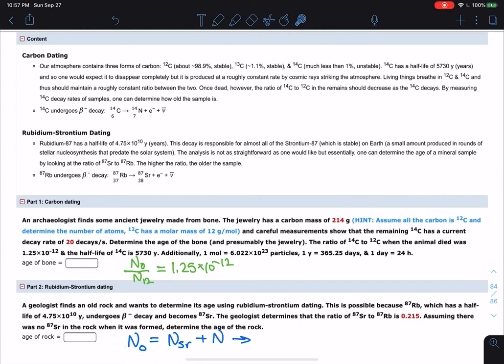which is the number of rubidium atoms that have not decayed. So if I divide everything by that, I get N-naught over N equals the number of strontium atoms to my number of rubidium atoms plus 1.